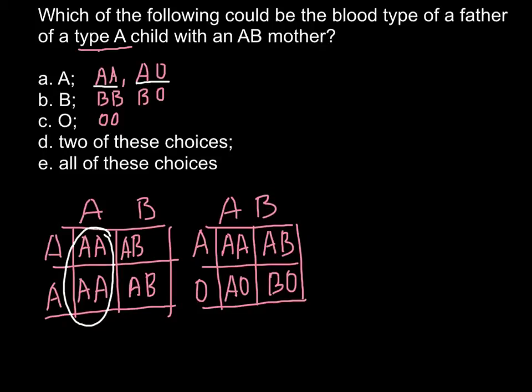As you see, this genotype AO also produces, in 50% of the cases, blood type A. So both genotypes meet our requirements.